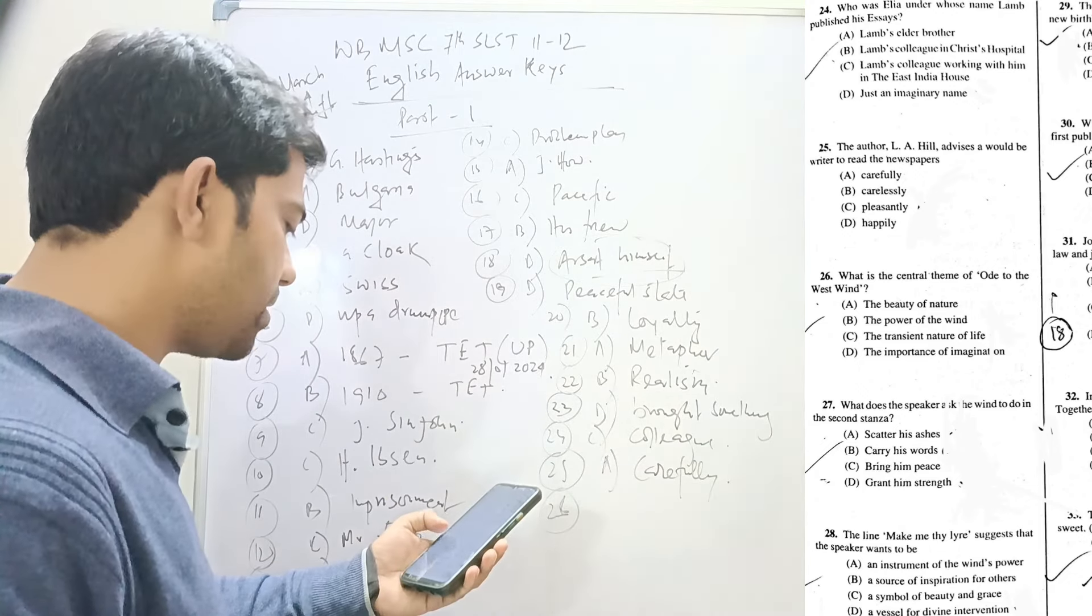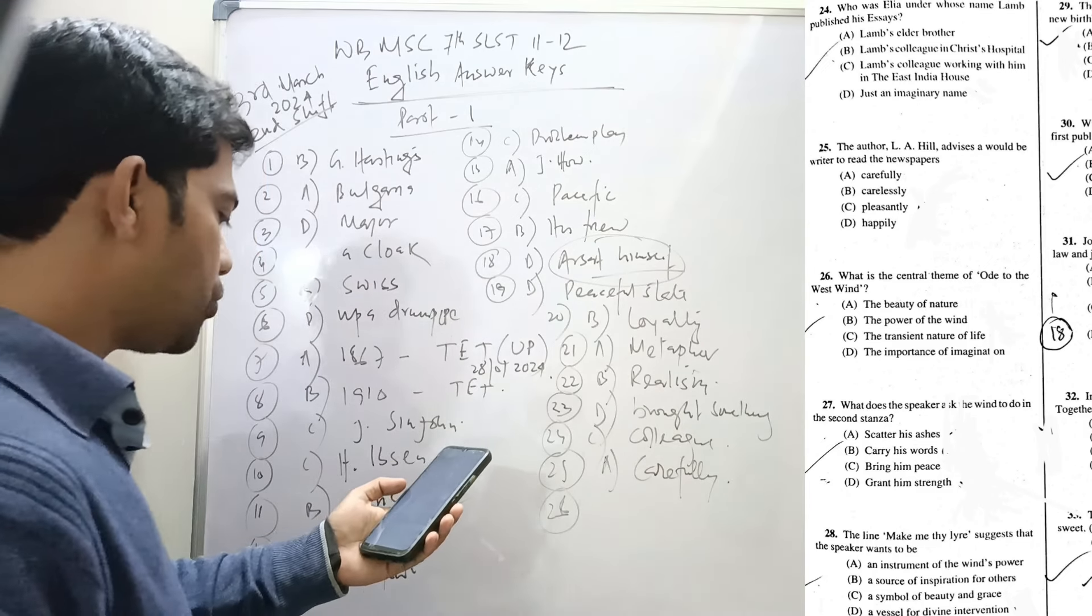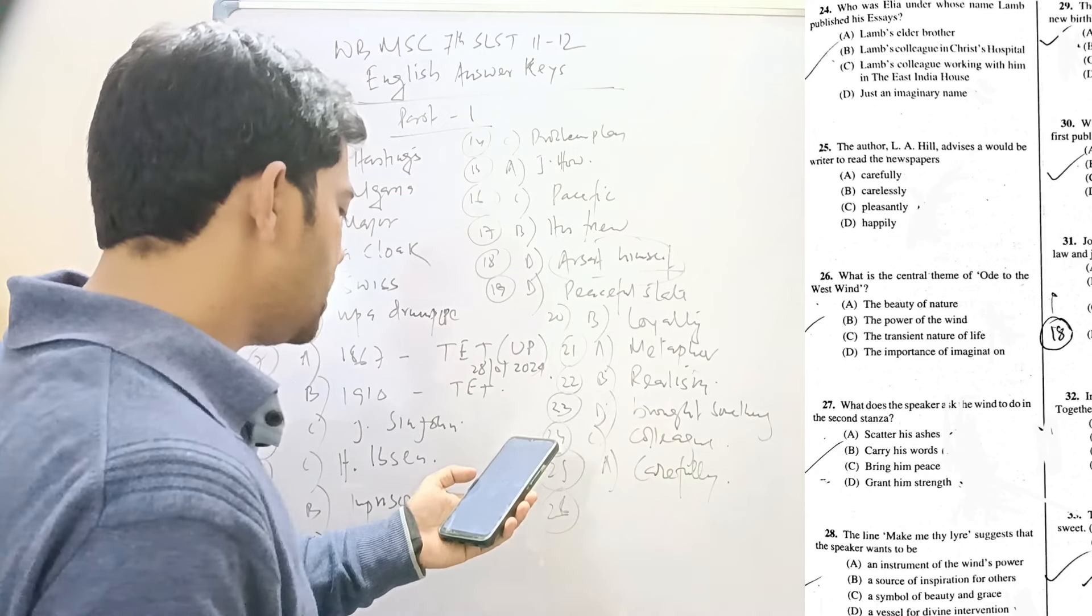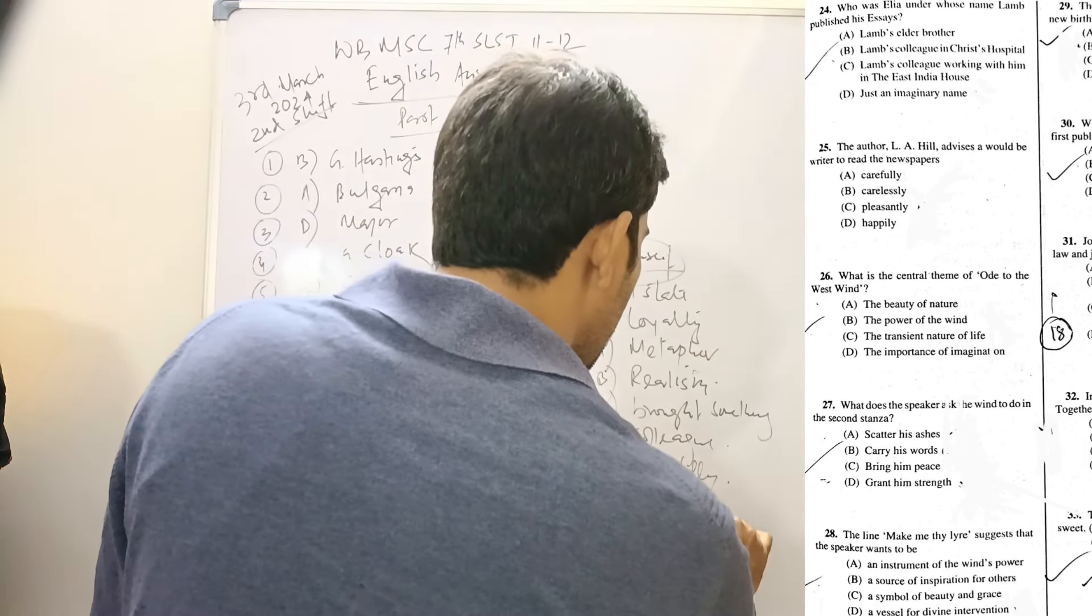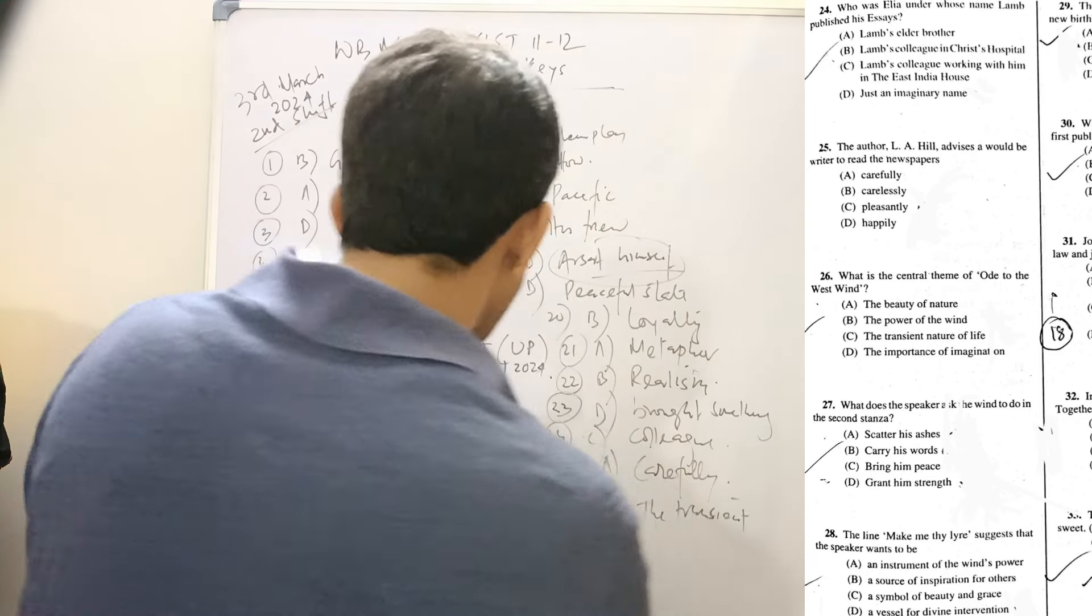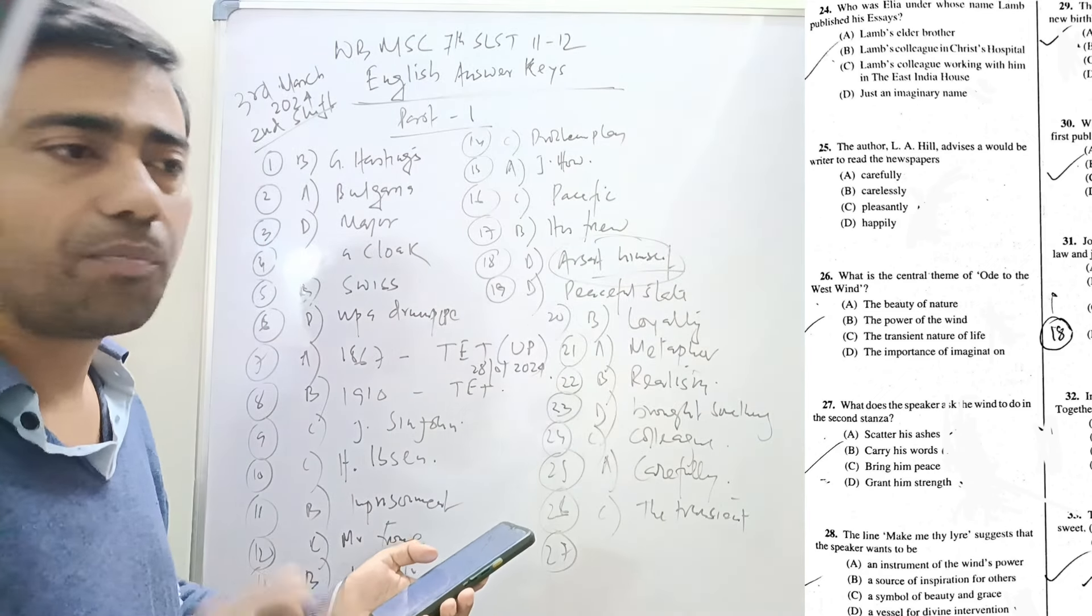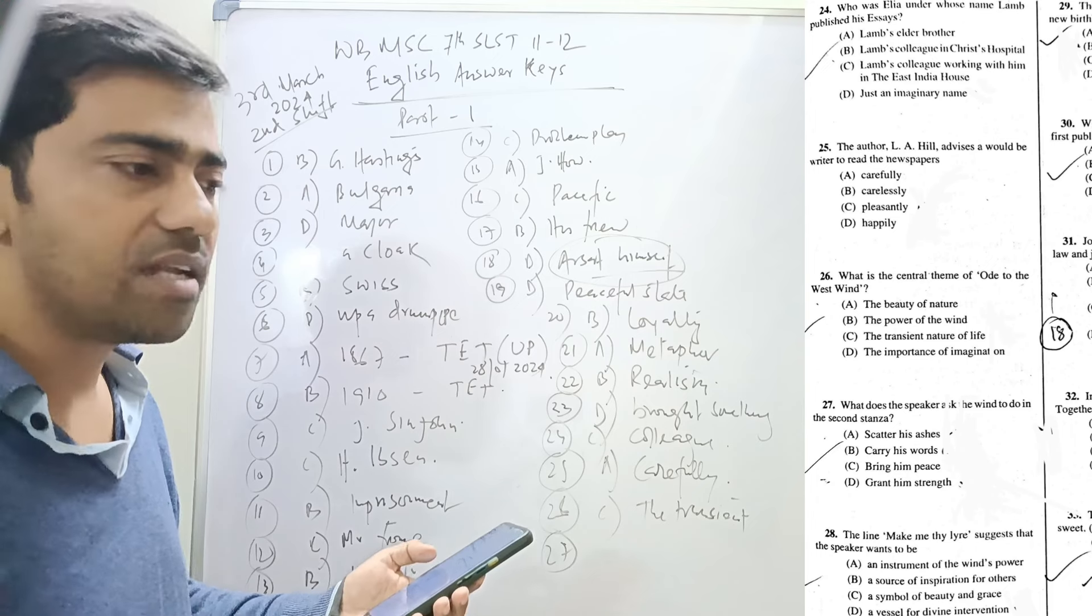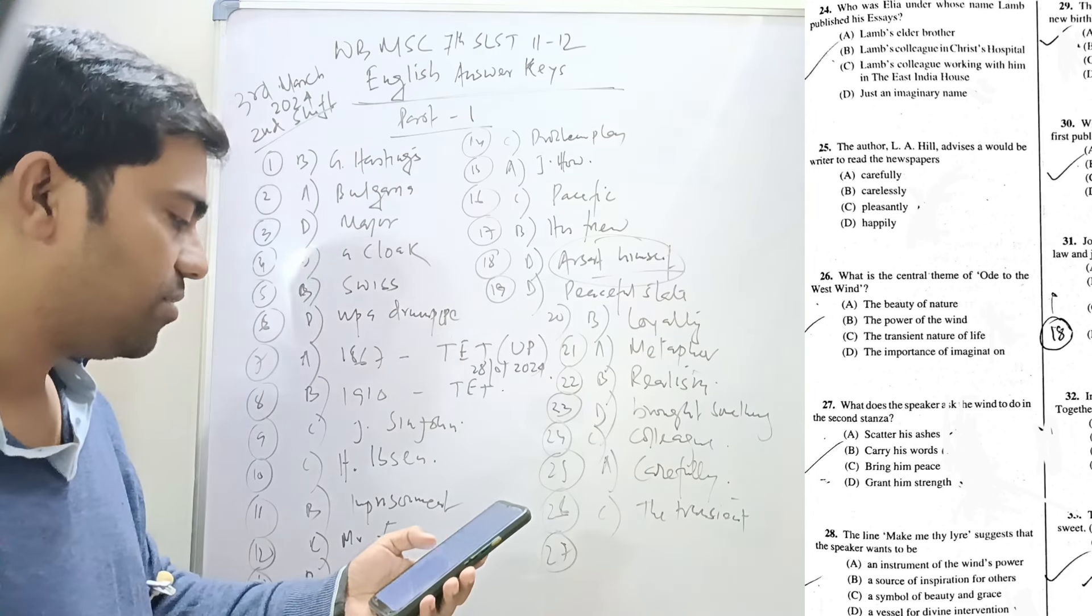Twenty-six: What is the central theme of Ode to the West Wind? The central theme is the transient nature of life, C. The poet Shelley himself compares his life to the spirit of the wild west wind.